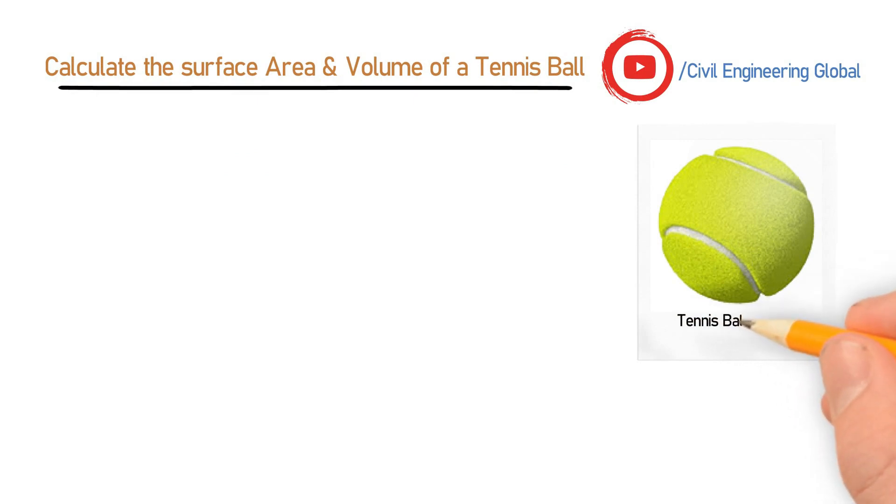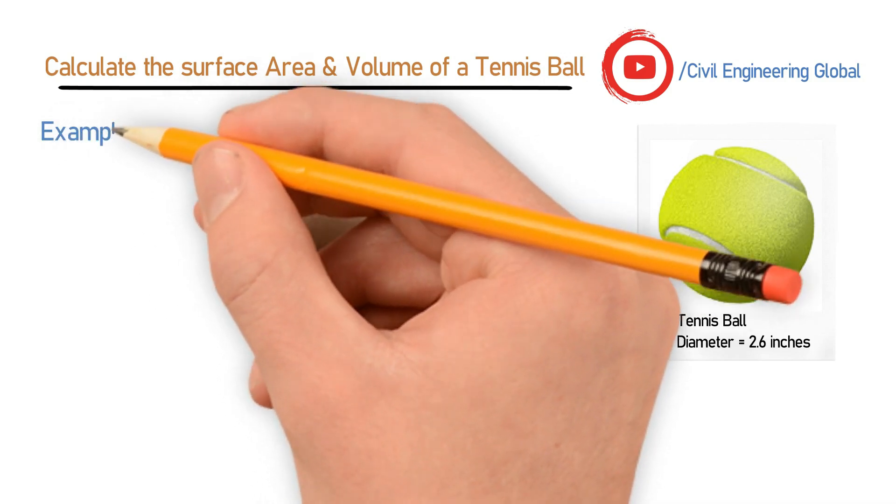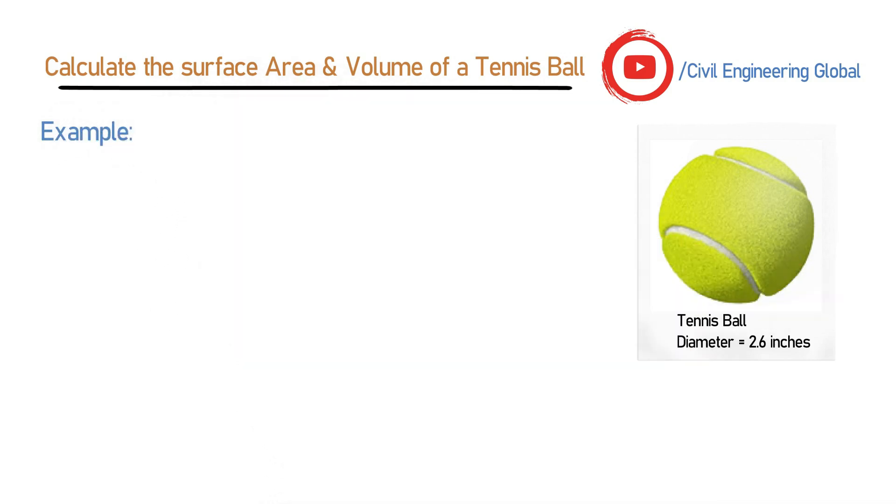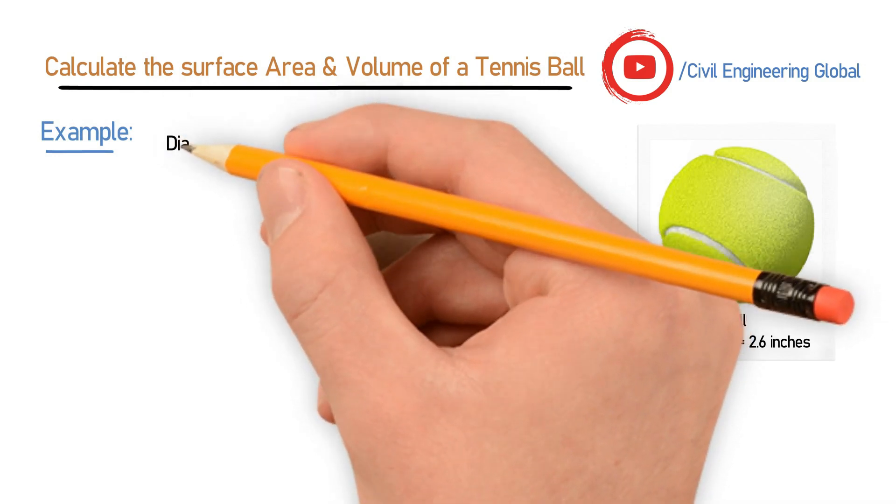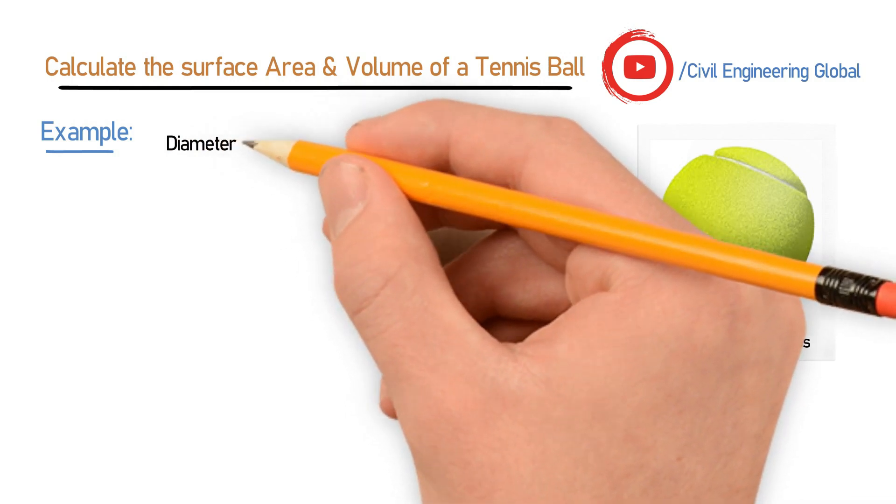Coming to the example, for the ordinary tennis ball we have the diameter which is equal to 2.6 inches. So in this example, diameter D = 2.6 inches.